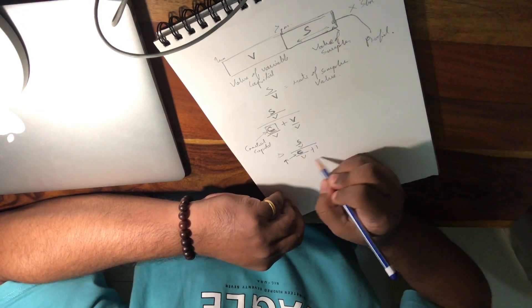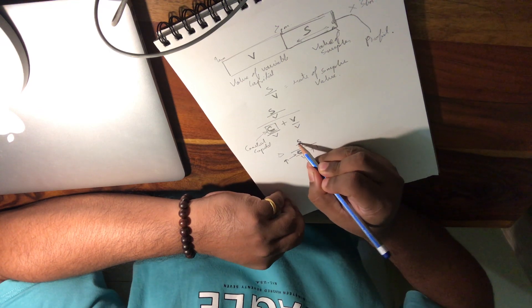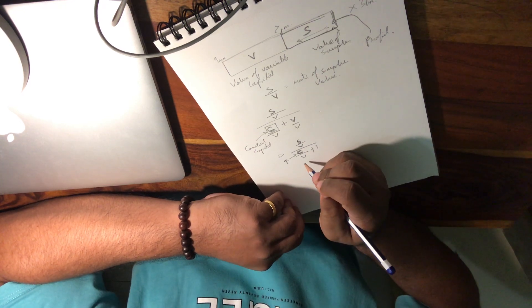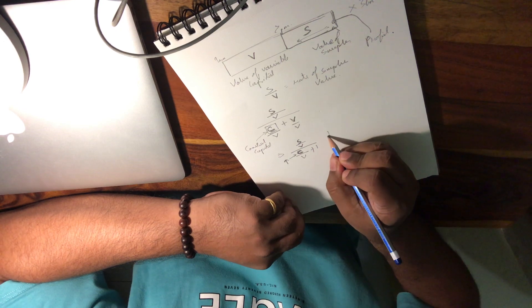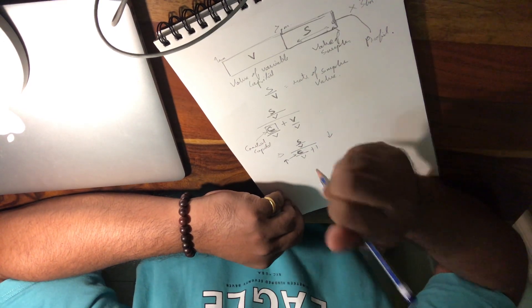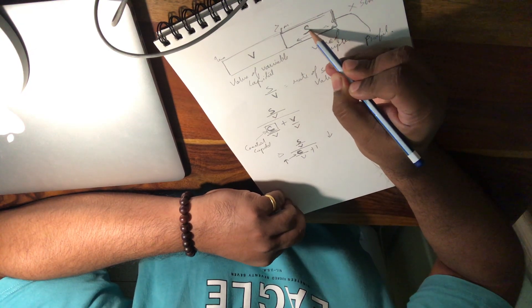So this denominator, essentially the value goes up. Whereas if the numerator value, which is S by V, the rate of surplus, is lower than the denominator, then this entire equation essentially starts diminishing. And that's where the issue with capitalism is.